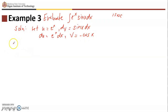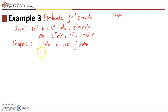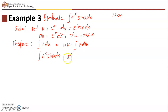Therefore, applying the integration by parts formula — integral of u dv equals u·v minus integral of v du — our integral of e to the x sine x dx equals u times v, which is e to the x times negative cosine x, so we write negative e to the x cosine x.